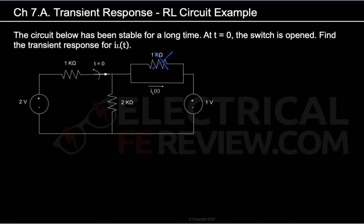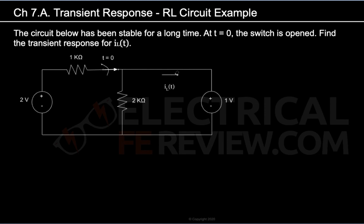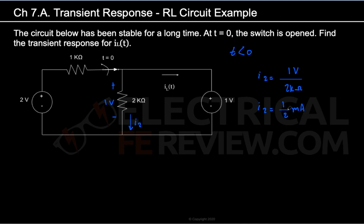Our updated circuit looks like this. Now let's find IL for when time is less than 0. The 1V voltage source is in parallel with the 2kΩ resistor, and two elements in parallel have the same voltage across them. So the 2kΩ resistor also has 1V across it. Labeling this current I2, I2 equals 1V divided by 2kΩ, which gives I2 equal to 0.5 milliamps. Notice the units are milliamps since we're dividing volts by kilohms.